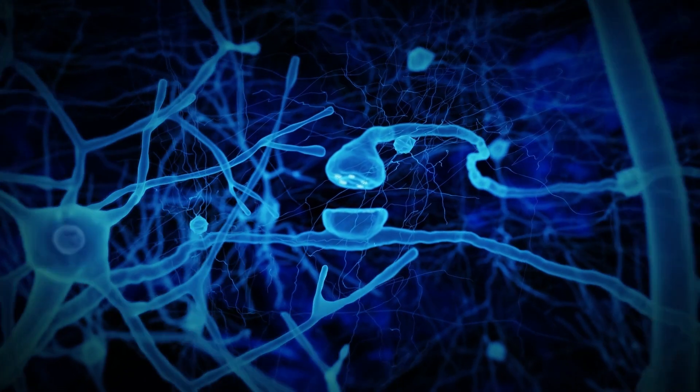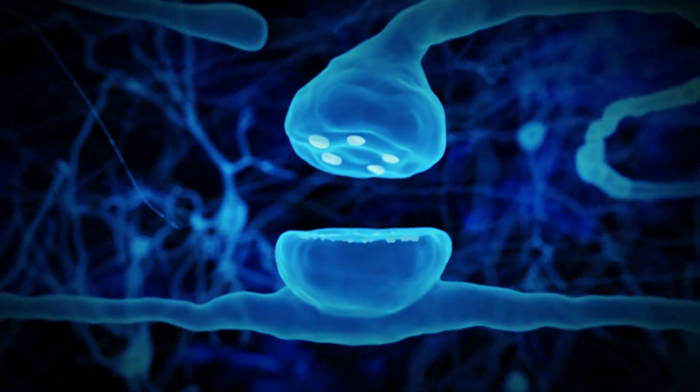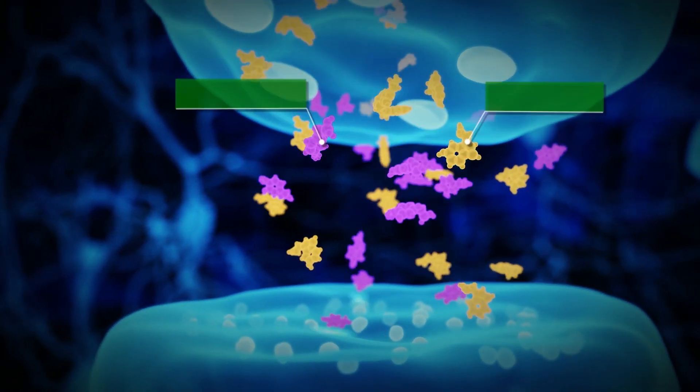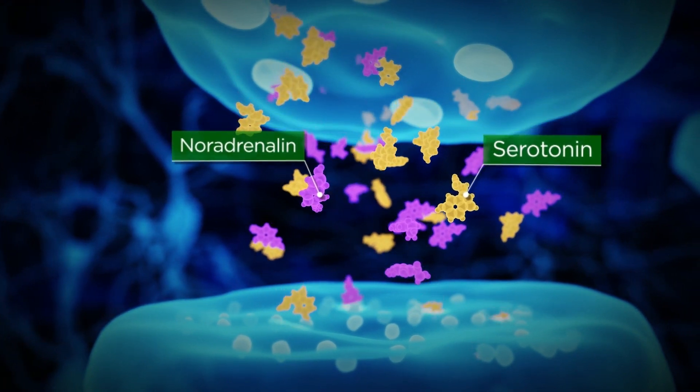The brainstem pain regulation center processes the electrical signals from the arm and in turn releases serotonin and noradrenaline, neurotransmitters that inhibit the incoming messages of pain in the trigeminal cervical complex that occur during a migraine headache.